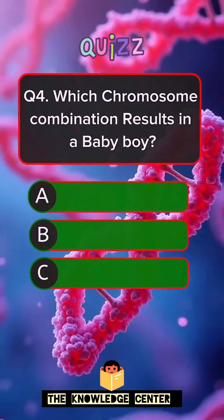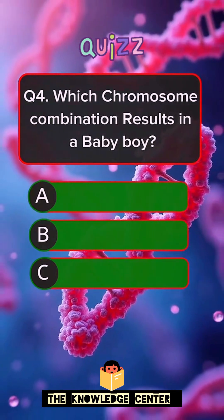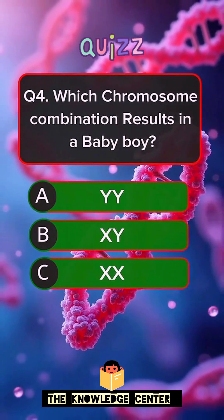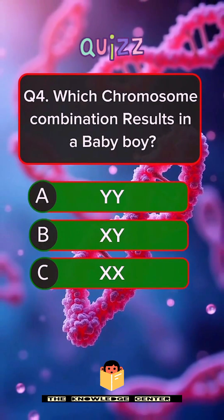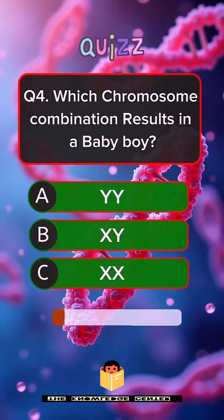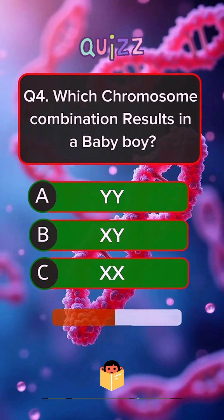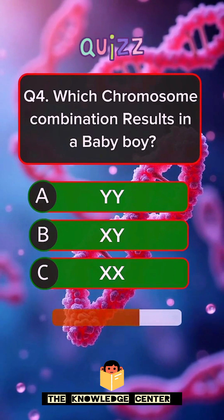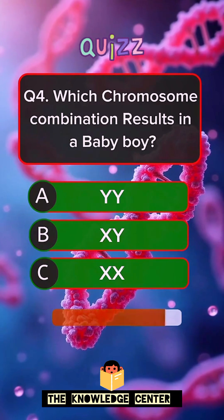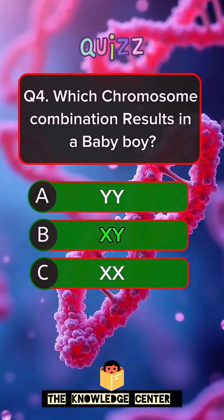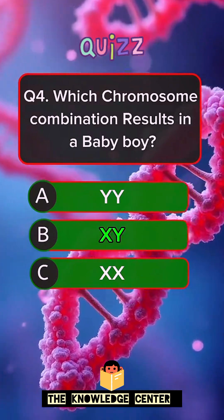Question 4. Which chromosome combination results in a baby boy? Answer B. XY.